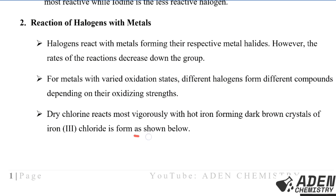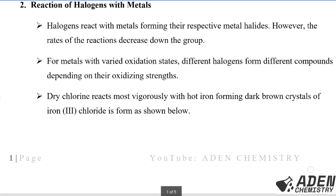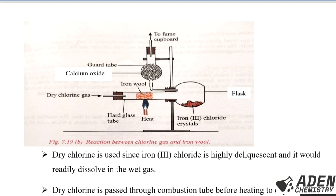Dry chlorine reacts most vigorously with hot iron forming dark brown crystals of iron(III) chloride. Looking at the experimental diagram: dry chlorine gas is passed through a combustion tube containing iron wool that is being heated. The iron(III) chloride crystals are collected in a flask, and there is a guard tube containing calcium oxide at the end.